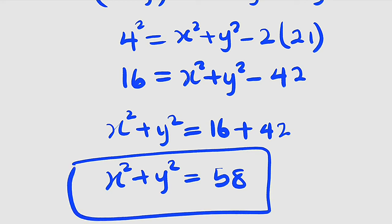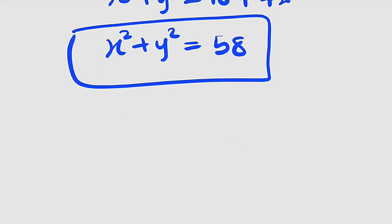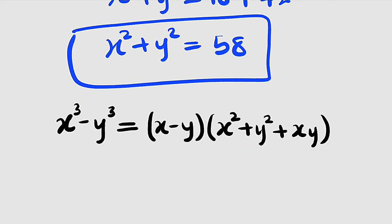So therefore, x cubed minus y cubed is now equal to, remember x minus y is equal to 4.